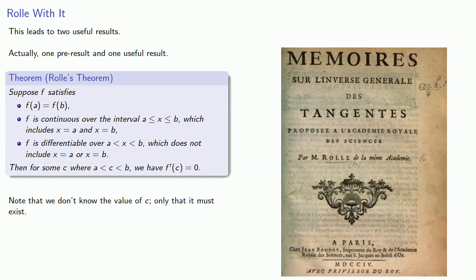And it's also worth reading the fine print, which in this case doesn't exist. In particular, while this says there's some c, it doesn't preclude the possibility that there may be more than one. So, there could be more than one place where our derivative is equal to 0.